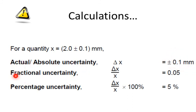The fractional uncertainty would be the absolute uncertainty divided by the quantity. So it would be 0.1 divided by 2.0.